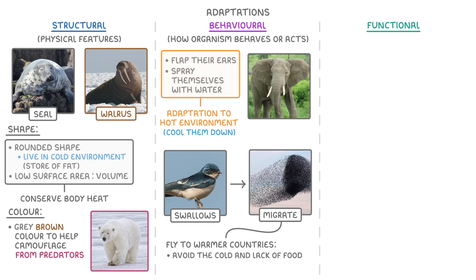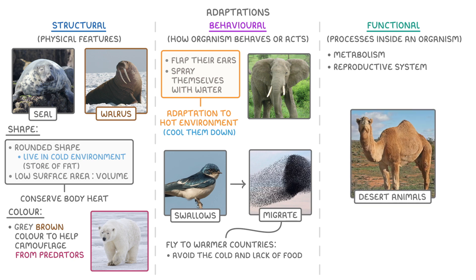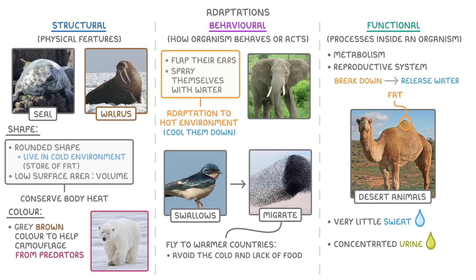Functional adaptations are the hardest ones to notice. These relate to processes going on inside an organism's body, like their metabolism or reproductive system. For example, many desert animals conserve water by producing very little sweat and only small amounts of concentrated urine. While camels accumulate lots of fat in their humps, which they can then break down later to release water.